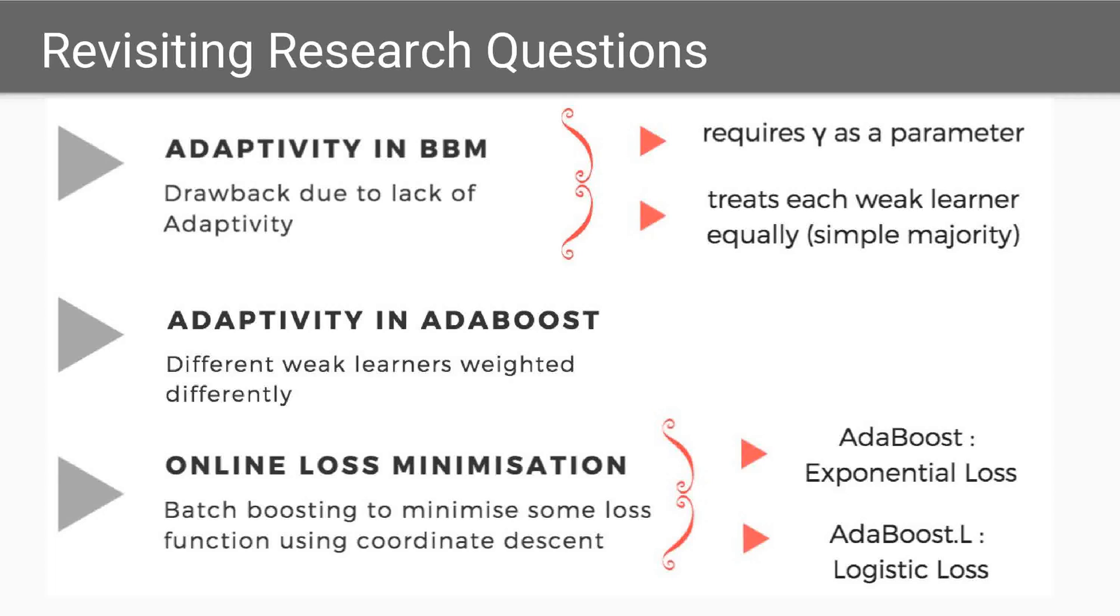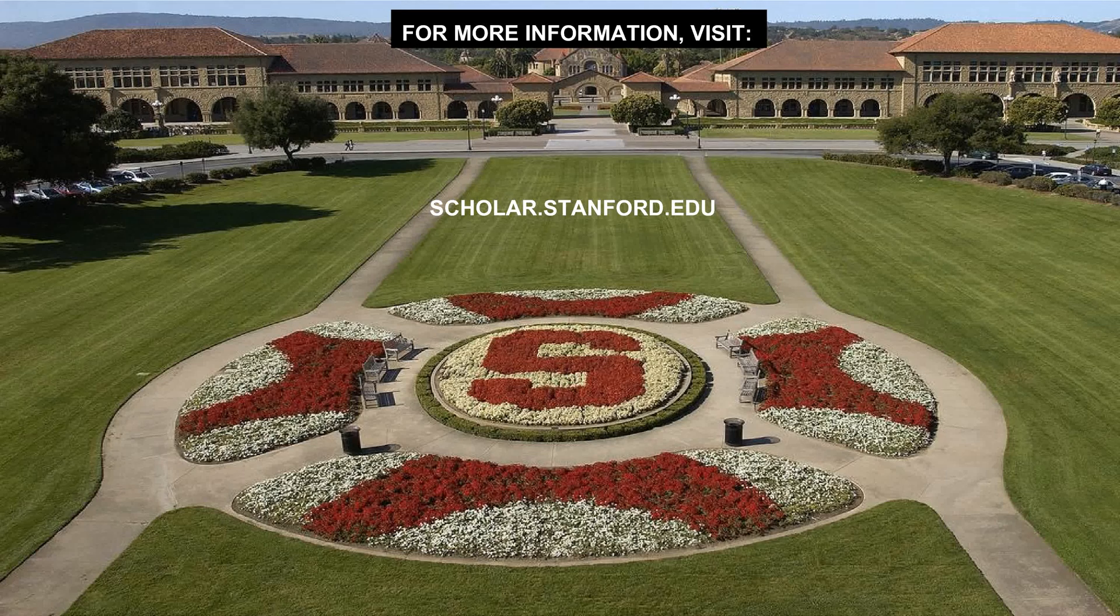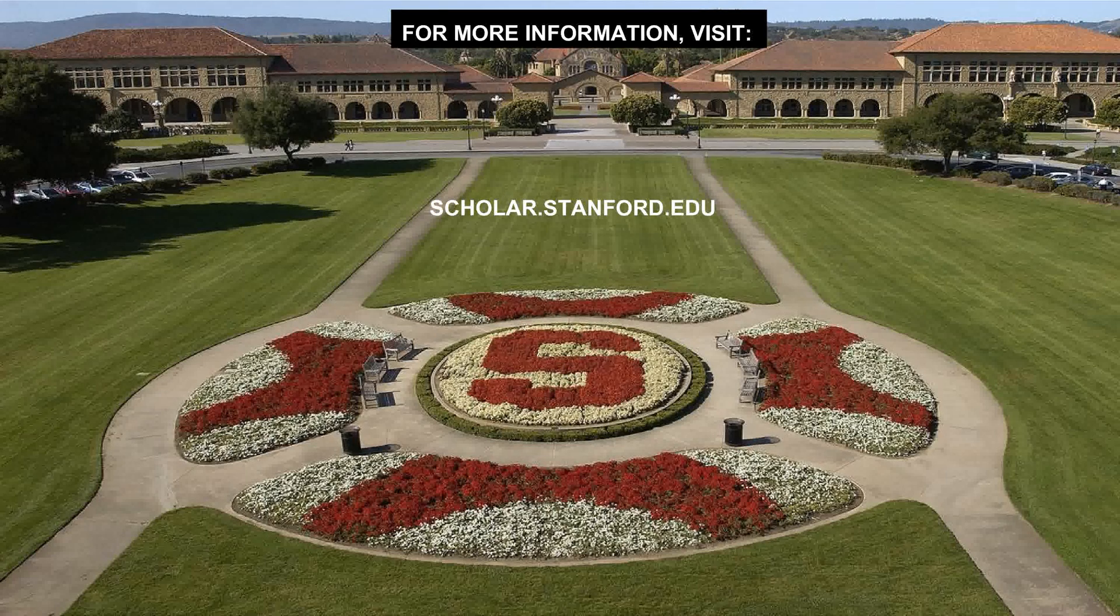Recapitulating our research questions, we look at the key areas the paper contributes to and the factors underlying the BBM and the AdaBoost algorithm, specifically adaptivity and loss minimization. With this, we arrive at the end of our talk about optimal and adaptive algorithms for online boosting. If you would like to know more about our talks, please visit scholar.stanford.edu. Thank you!